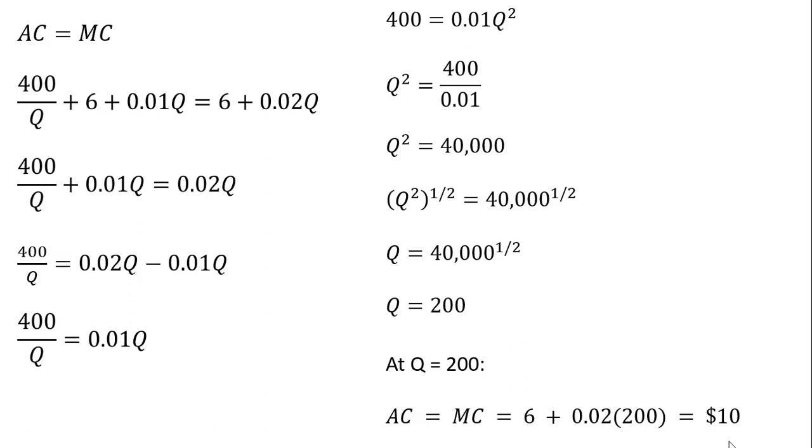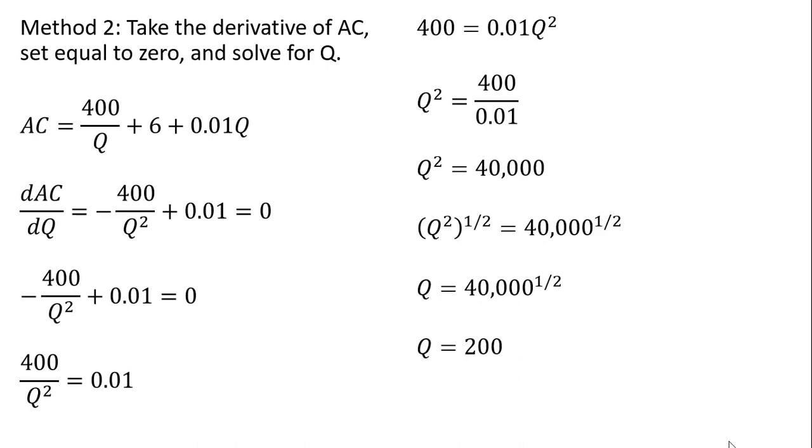All right, let me show you method two on how to solve where average cost equals marginal cost. Method two is we're going to take the derivative of the average cost equation, set that derivative equal to 0, and then solve for q.